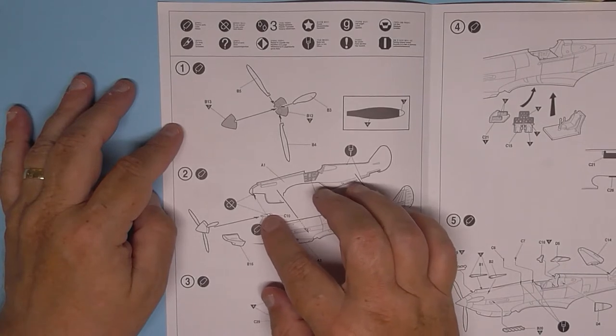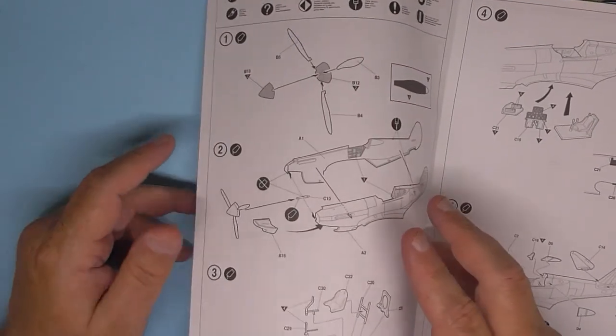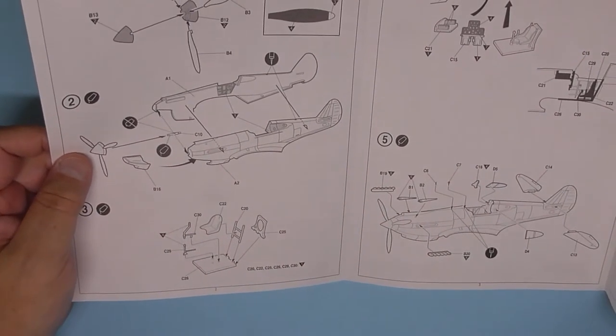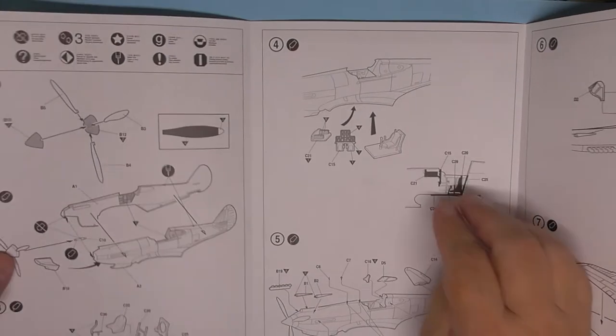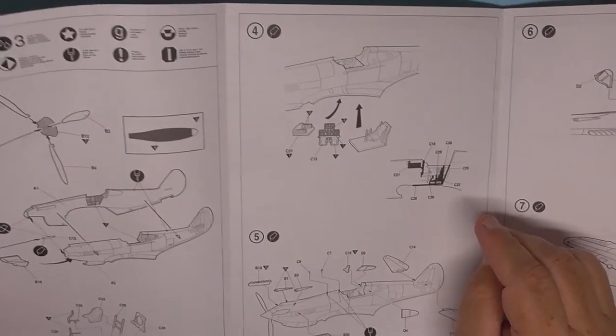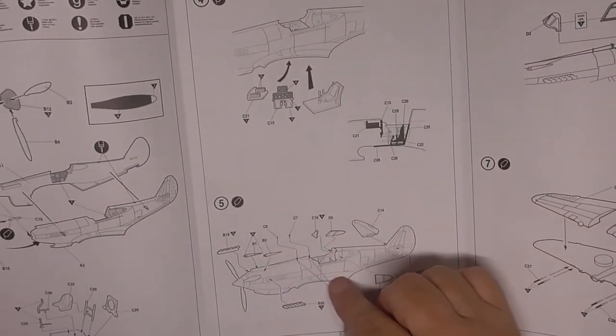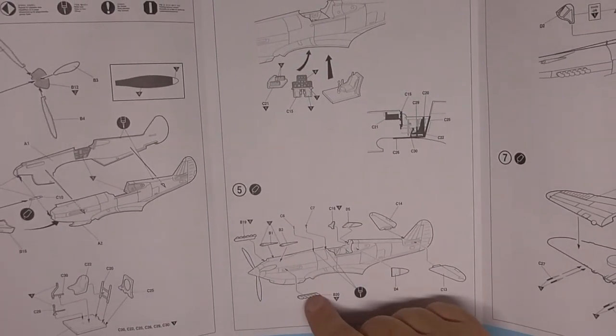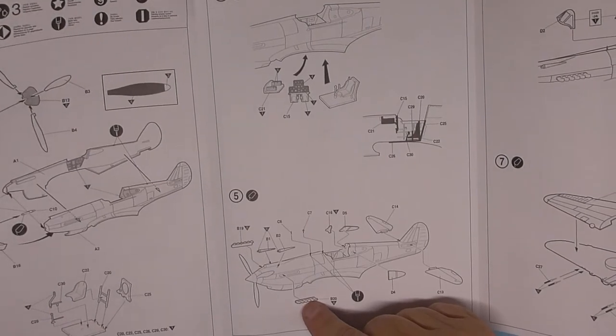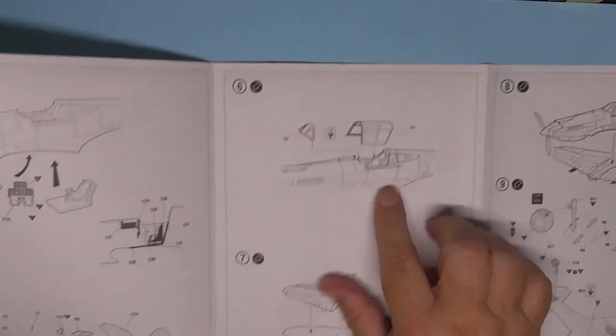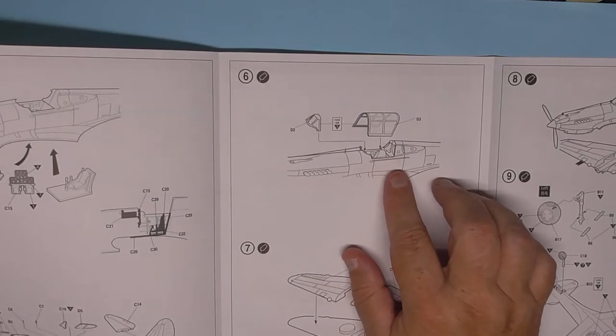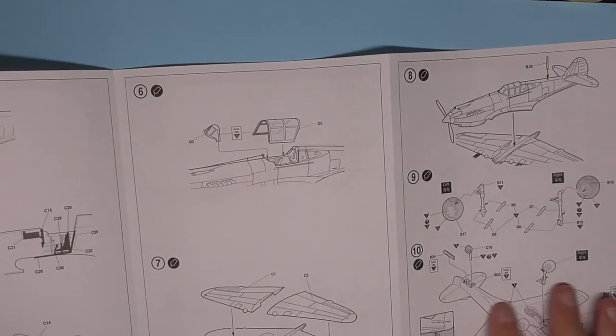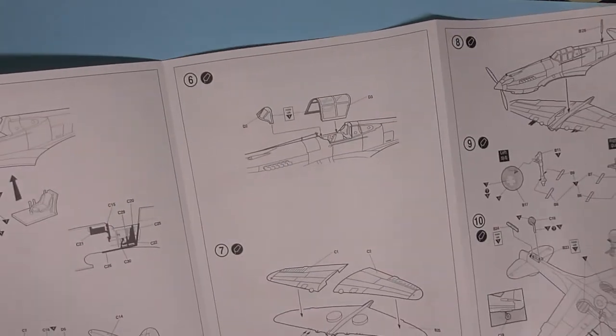Then you've got the seat going into the fuselage, more parts onto the fuselage, gun blisters there. We're going on later on, you know, the exhaust, canopy, building up the wings, undercarriage and that's about it really.